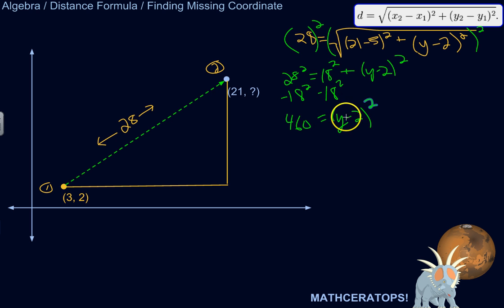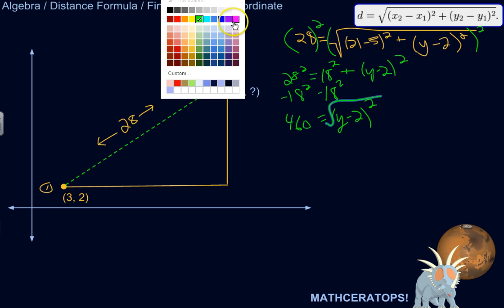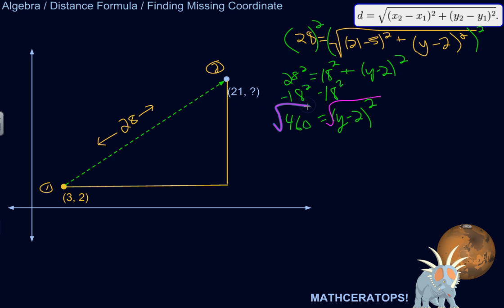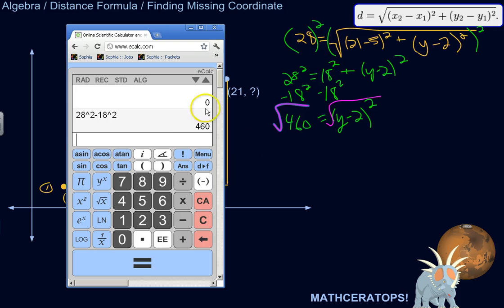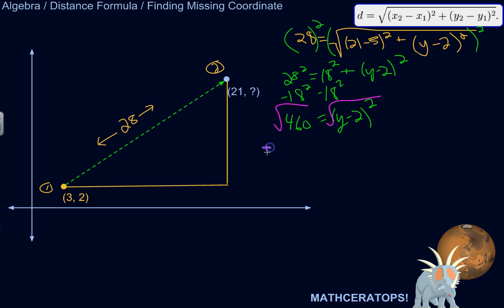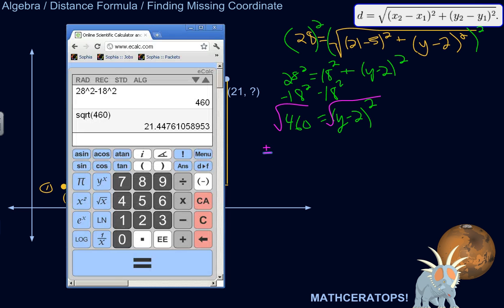Okay, so now I need to square root both sides. I'm continuing to try to get y by itself. So it's being squared, or it's part of an expression that's being squared. So I'm going to square root. Actually, let me switch colors again for fun. Okay, so the square root of 460 is plus or minus 21.447, let's say.